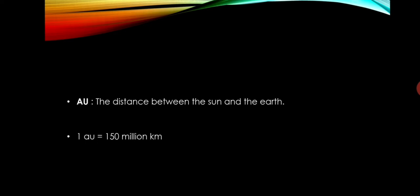The first unit used is astronomical unit. One astronomical unit is the distance between the Sun and the Earth, that is, 150 million kilometers.